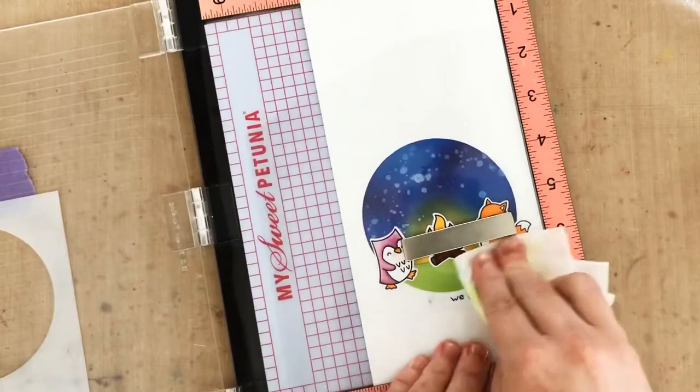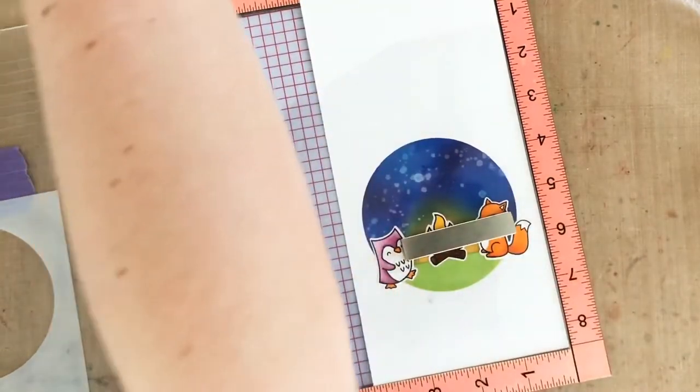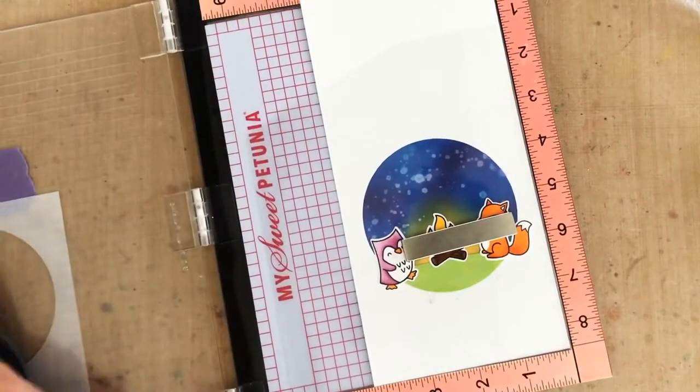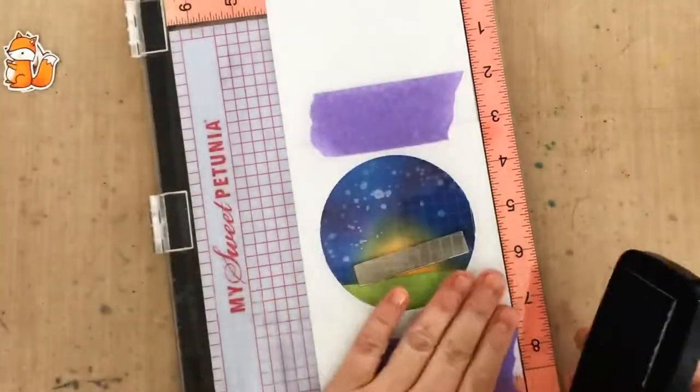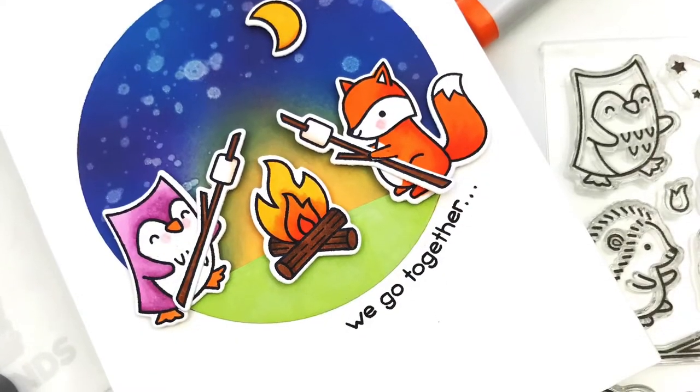Then after I'm happy with it, I can wipe off the acetate, pull it out of my MISTI, re-ink the stamp and stamp it again onto my actual card front. And finally, once that's done, I can stamp the rest of my sentiment inside my card and then add my little critters on the front.